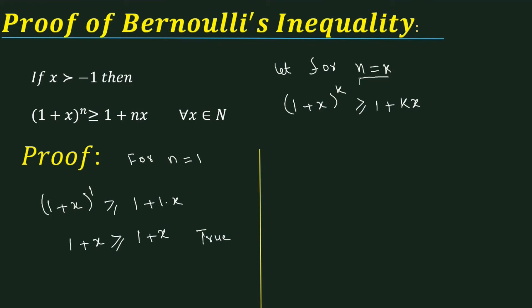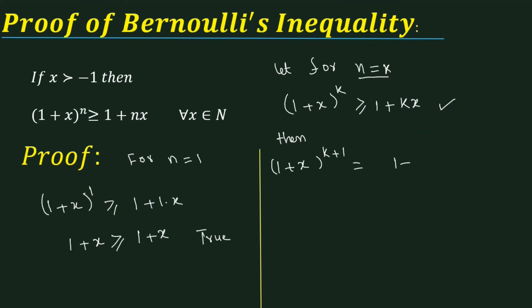If the statement is true for n is equal to k, then by mathematical induction it should be true for the next integer which is k plus 1. Then 1 plus x raised to the power k plus 1 can be written as 1 plus x raised to the power k, times 1 plus x. Now this will be greater than or equal to 1 plus kx, times 1 plus x.